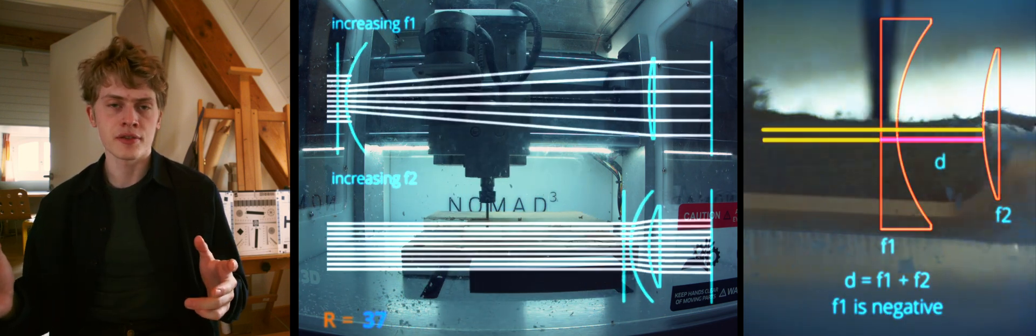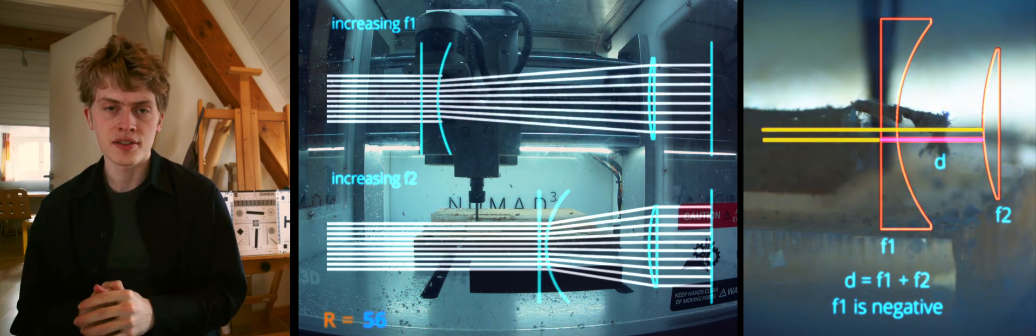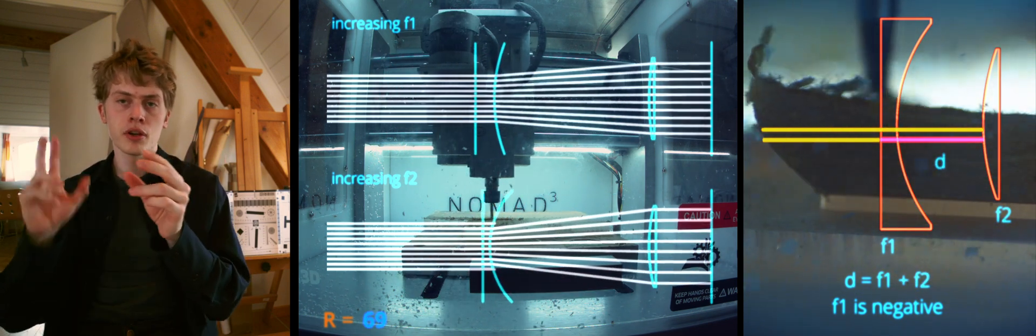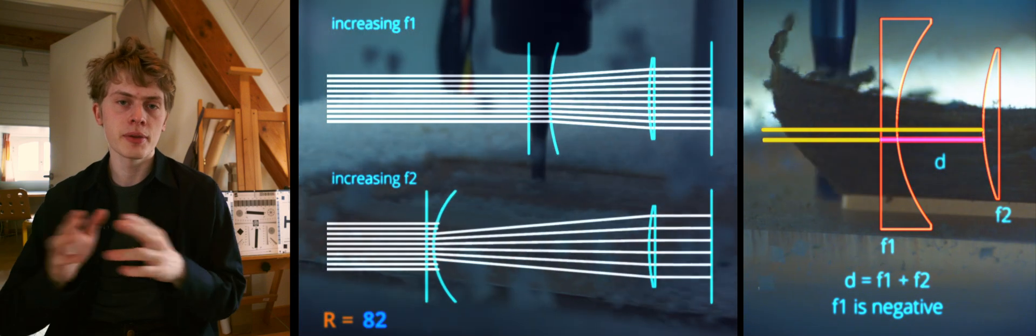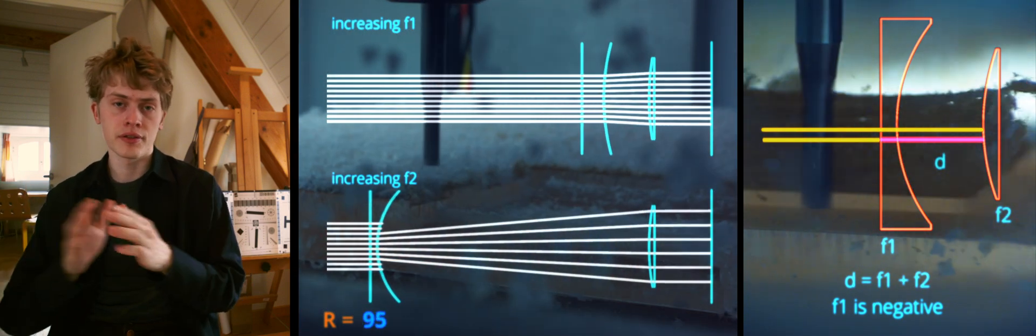There's one more thing to take into consideration, and that's the spacing between the elements. The formula says that the distance is equal to f1 plus f2, which means that the bigger the difference between the focal lengths of the two elements, the bigger the spacing.